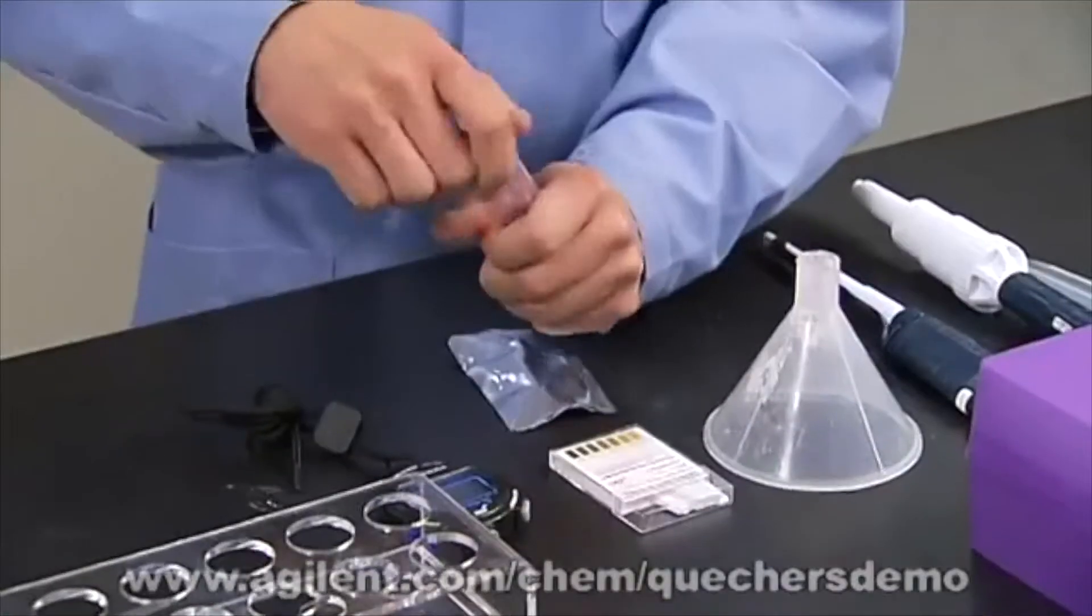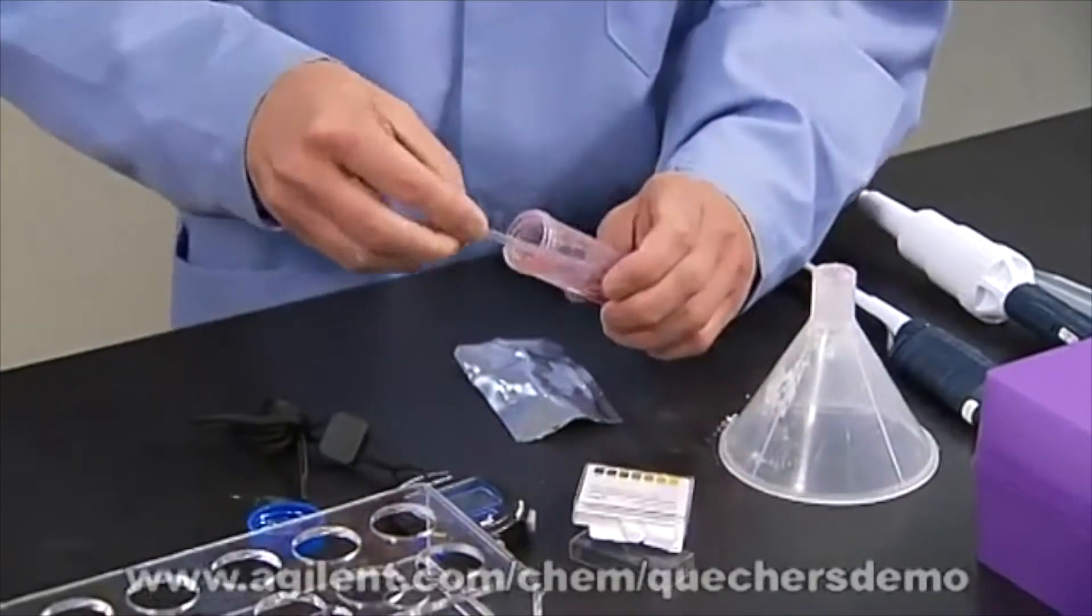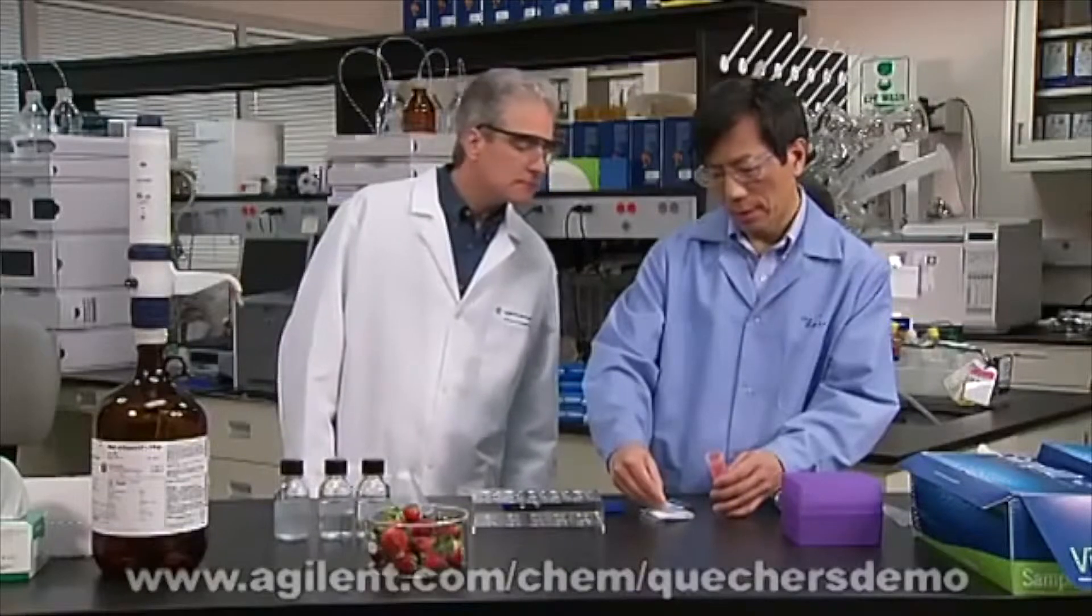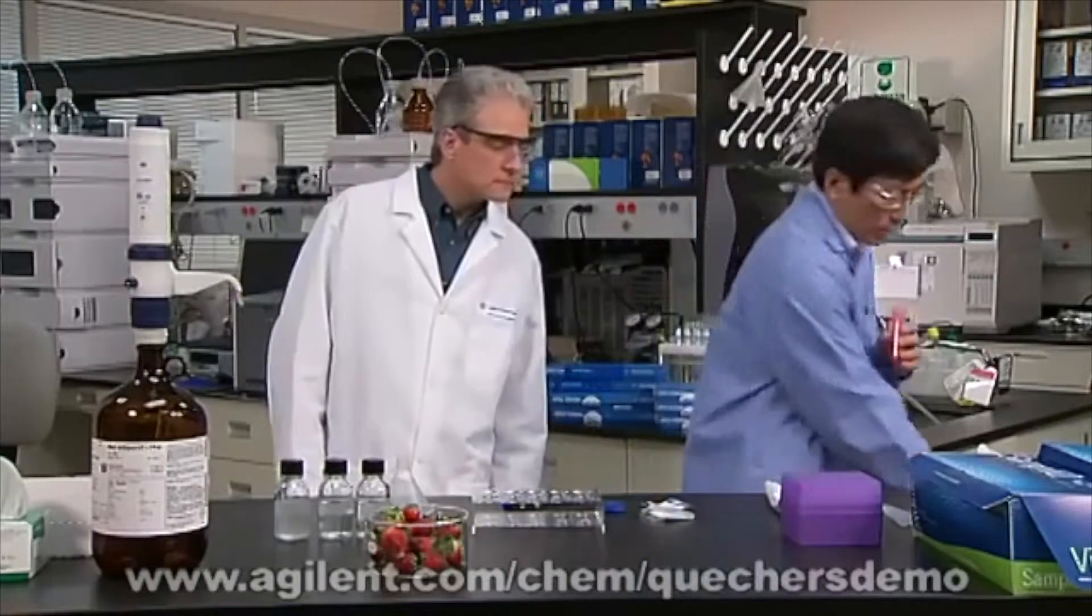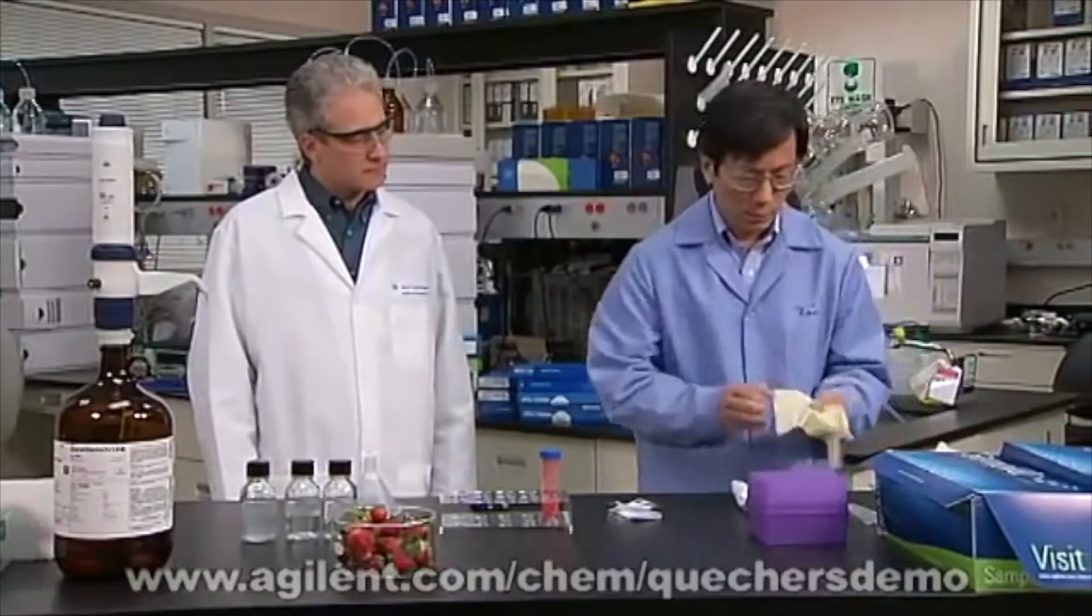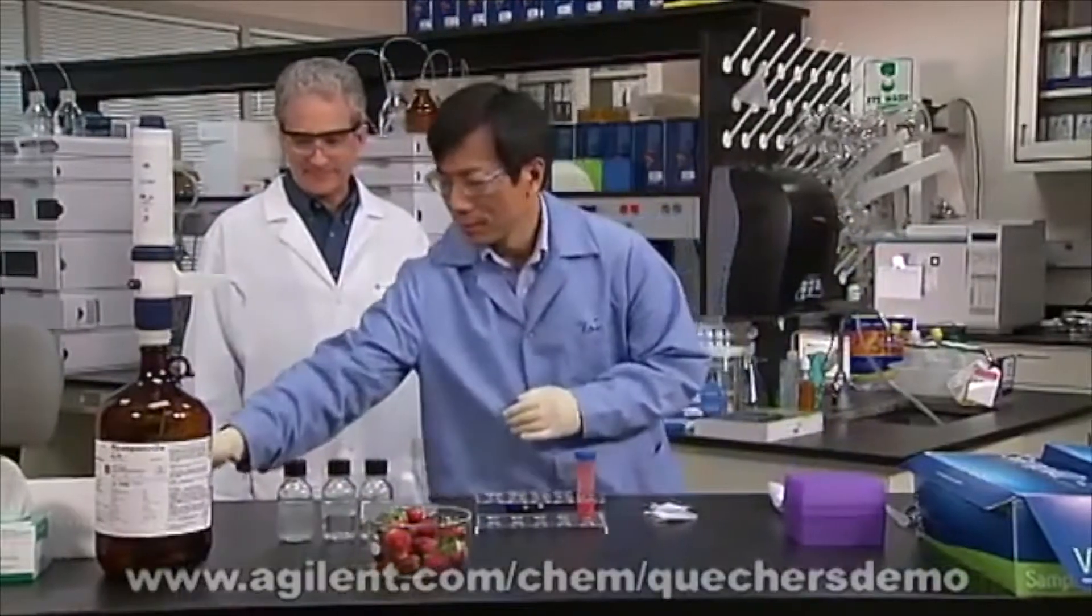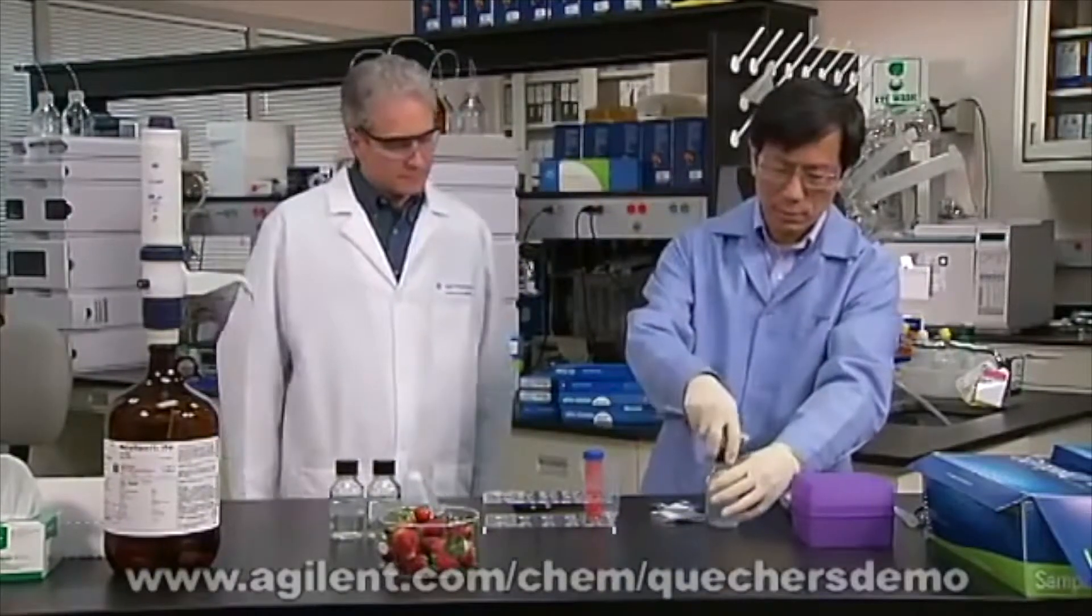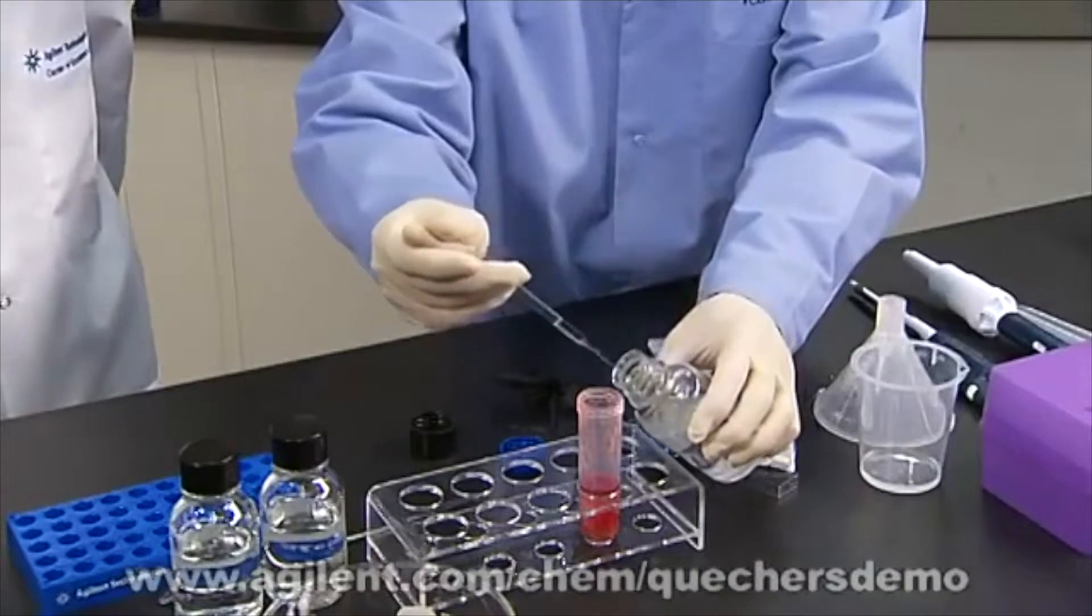Now we're going to check the pH. This is a little acidic, probably add a little bit. This is about 4.7 now, probably going to add a little bit sodium hydroxide to adjust the pH. This is five-normal sodium hydroxide.